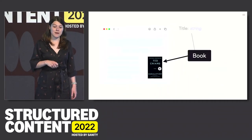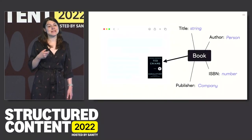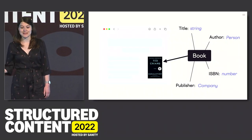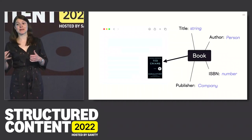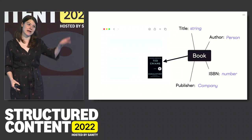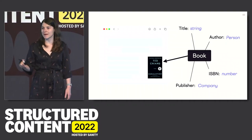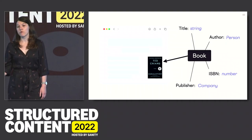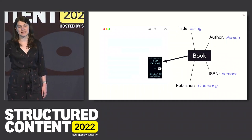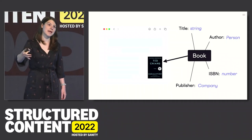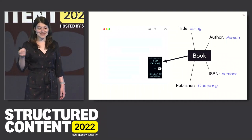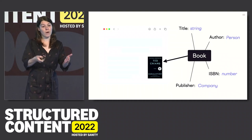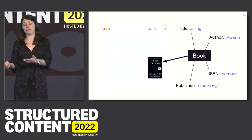We can fix this by simply adding structured data, which means labeling the content in a way where computers can understand it. We programmatically declare a type on this content, calling it a book, and we declare certain properties and expected data types. So a book is going to have a title — that's a text string — an ISBN number, and an author, which is going to be of the type person. So we also have connected types, because person is going to have a name, an address, a birthday. Computers are then able to understand what this content is about because we've given it a programmatic way to do so.